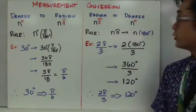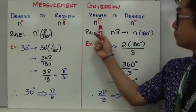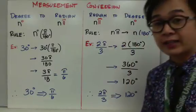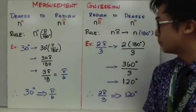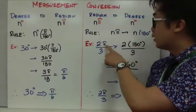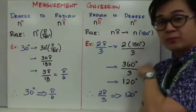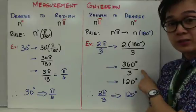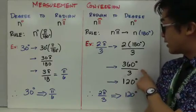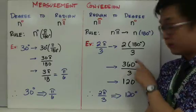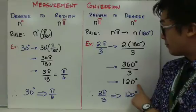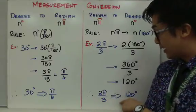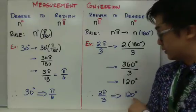To convert from radian to degree measure, substitute pi with 180 degrees. For example, to convert 2pi over 3: replace pi with 180, giving you 2 times 180 degrees divided by 3, which equals 360 degrees over 3. Dividing 360 by 3 gives 120 degrees. So 2pi over 3 equals 120 degrees in degree measure.